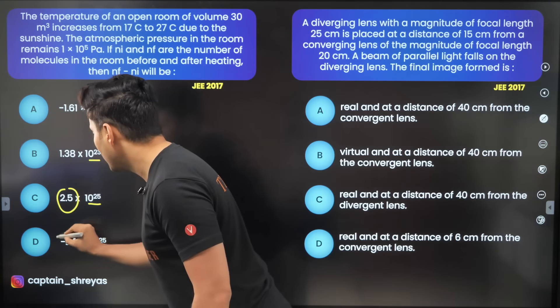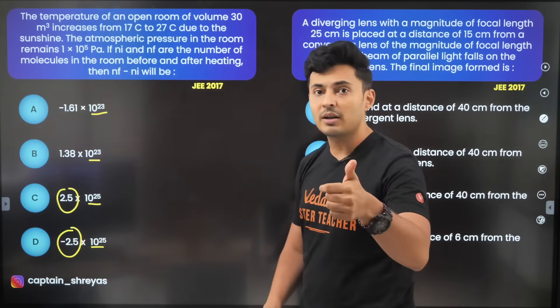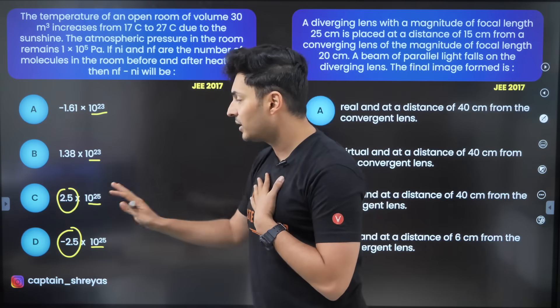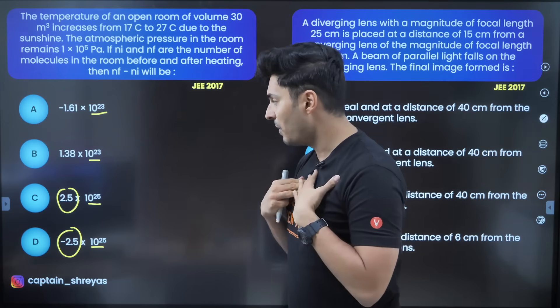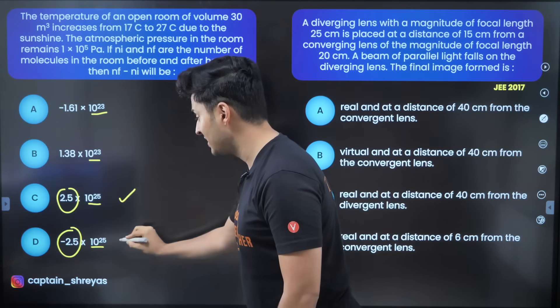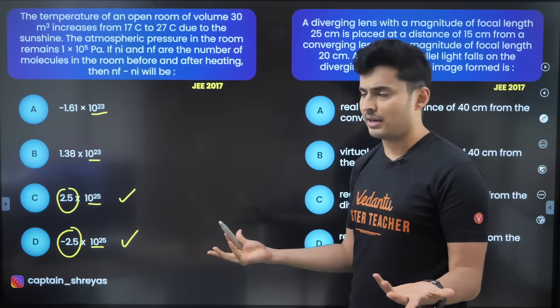So most likely the examiner wanted to trick you with the sign. Most likely many students might get 2.5 but they don't know what is the correct sign of this. So if I had to mark I would mark either option C or option D. I don't know which one is correct.